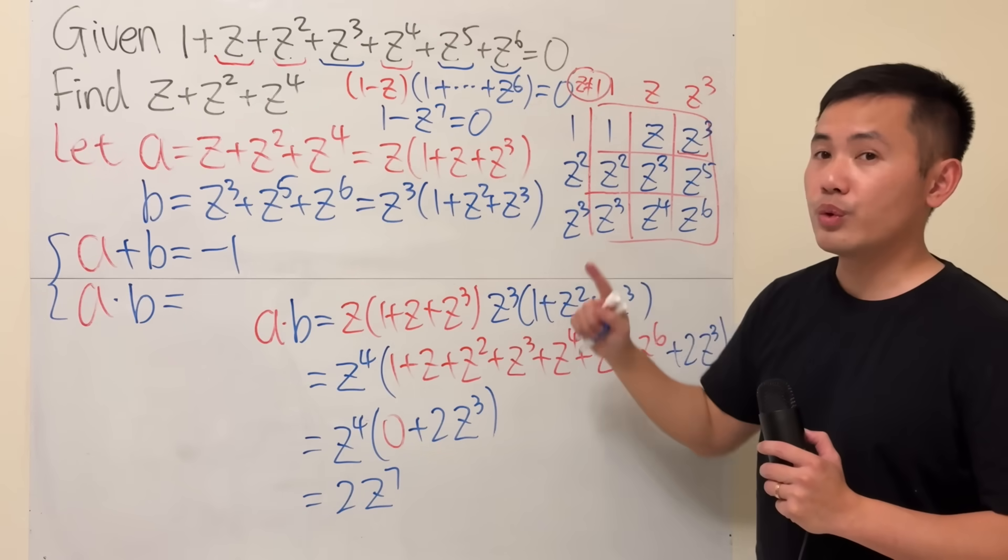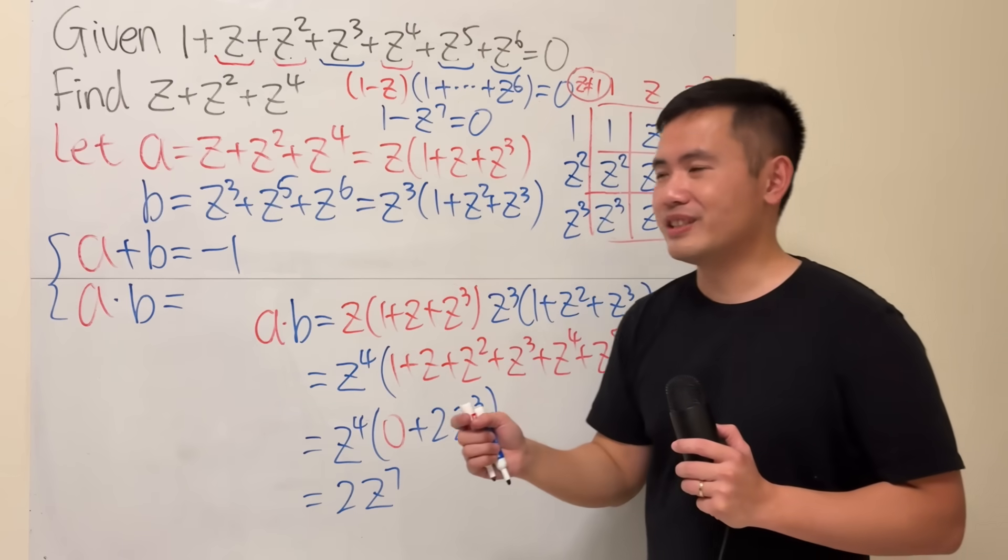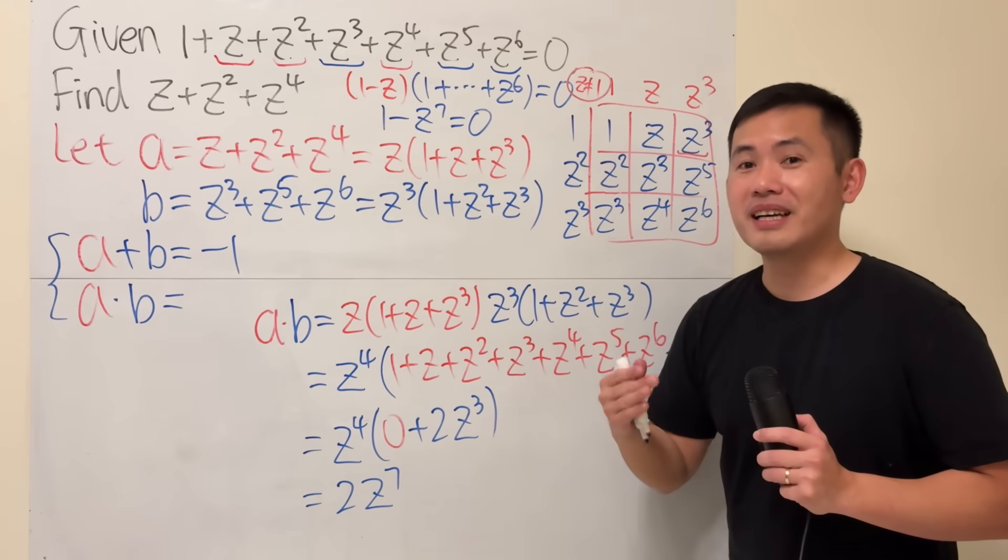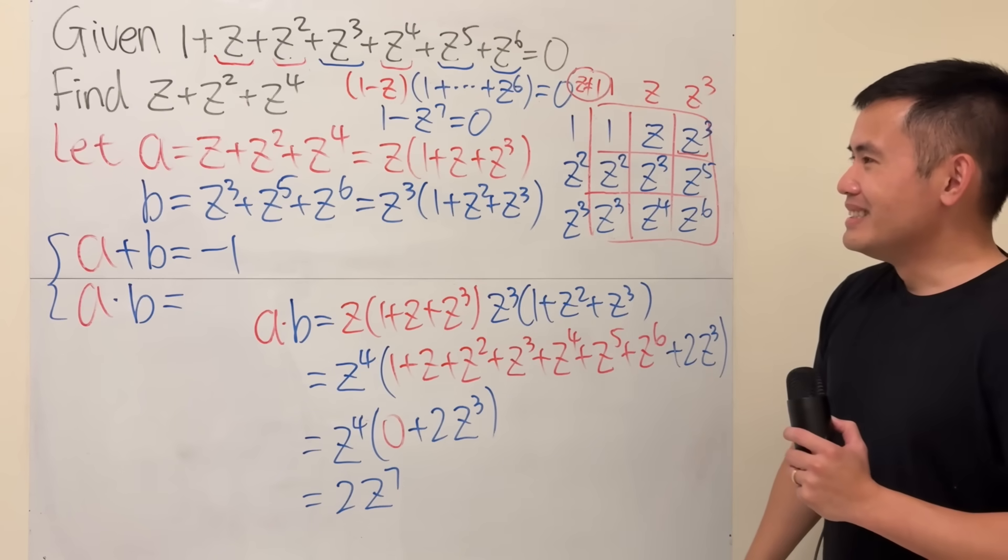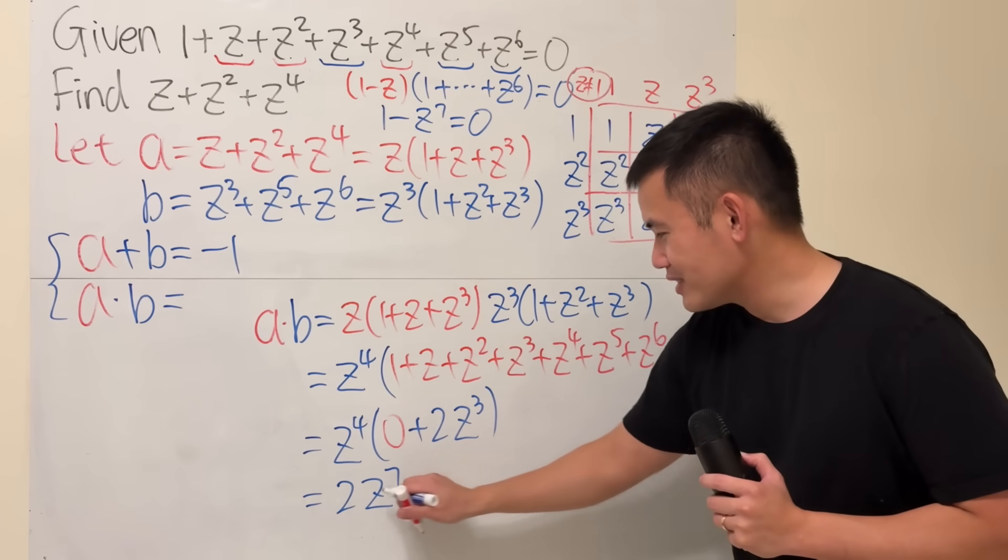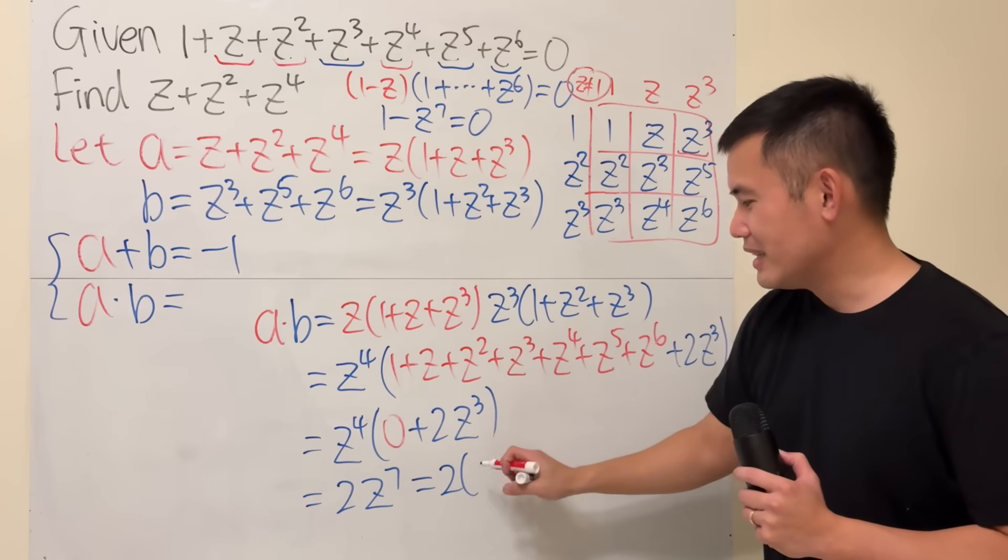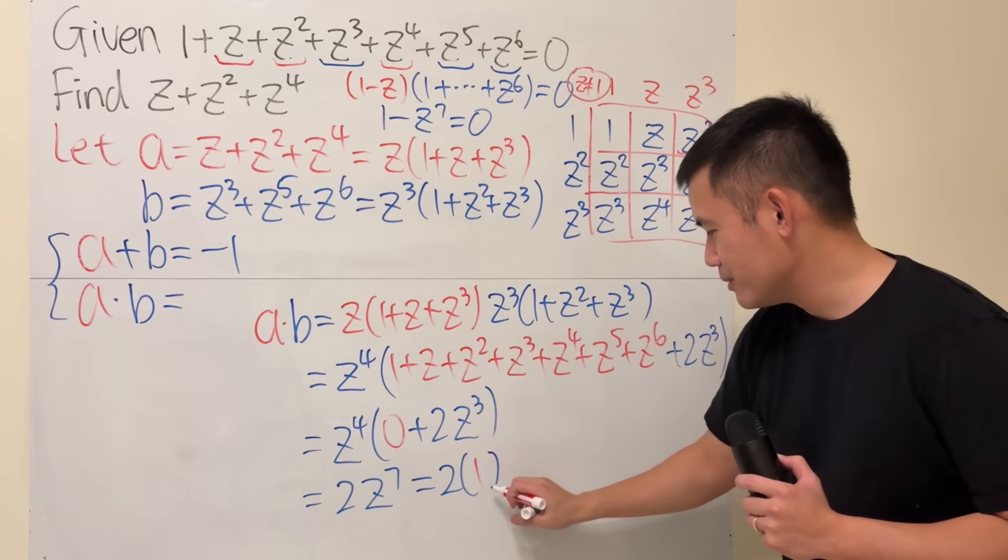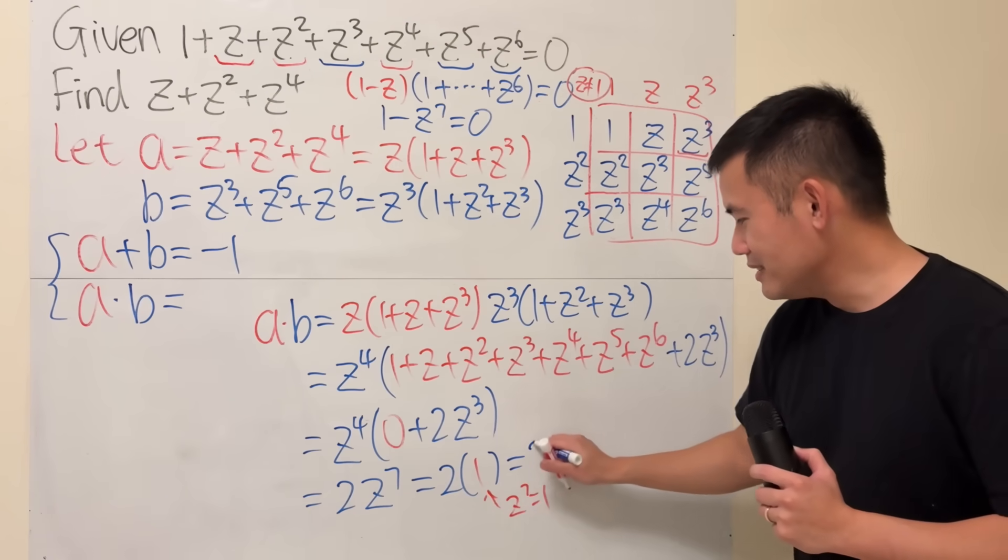You expand it, you just get 1 minus z to the seventh power is equal to 0. And again, remember, z is not equal to 1. In fact, z here is the seventh root of unity besides 1, which is pretty cool in my opinion. Anyways, what we are trying to do is that this right here is just 2, and then z to the seventh power from here, you can see that is just equal to 1. So this is equal to 2.